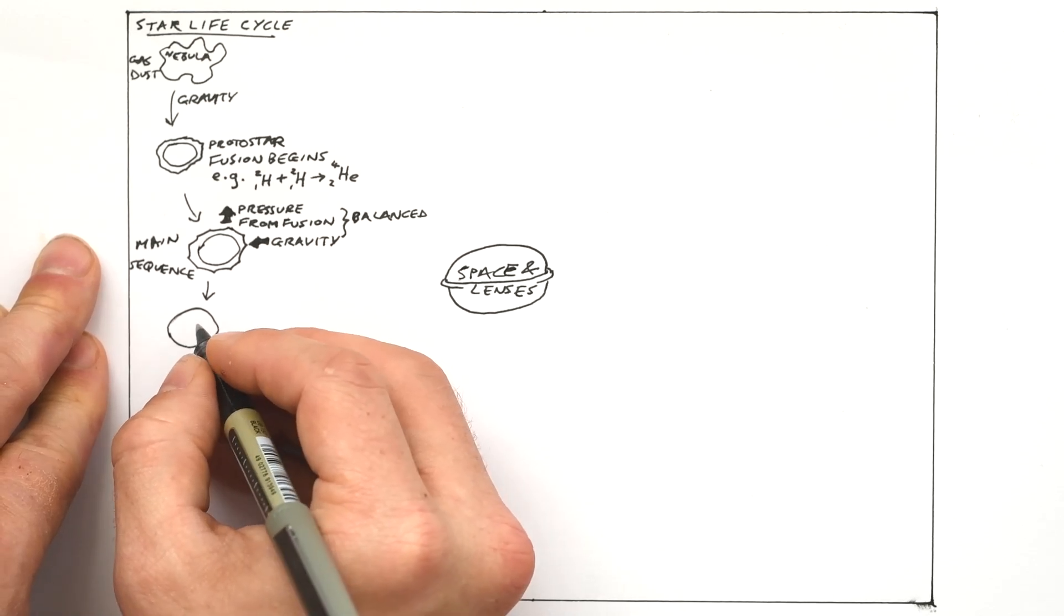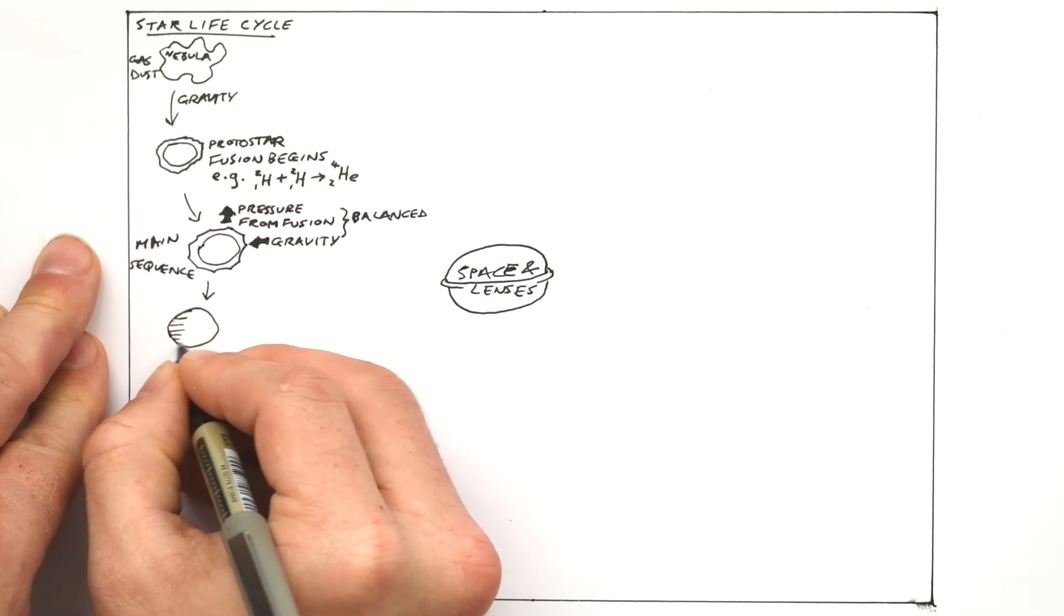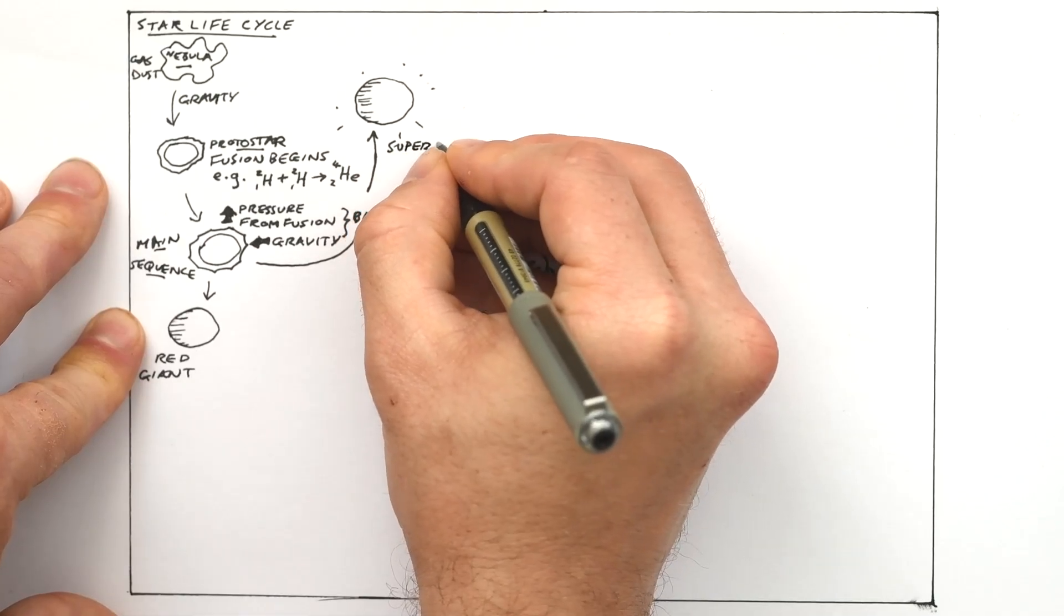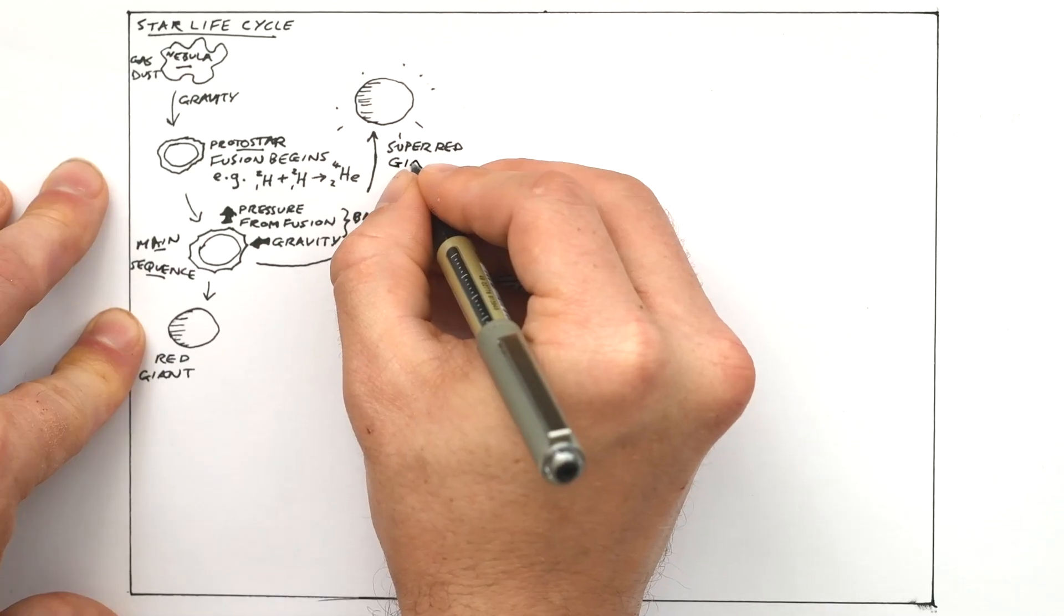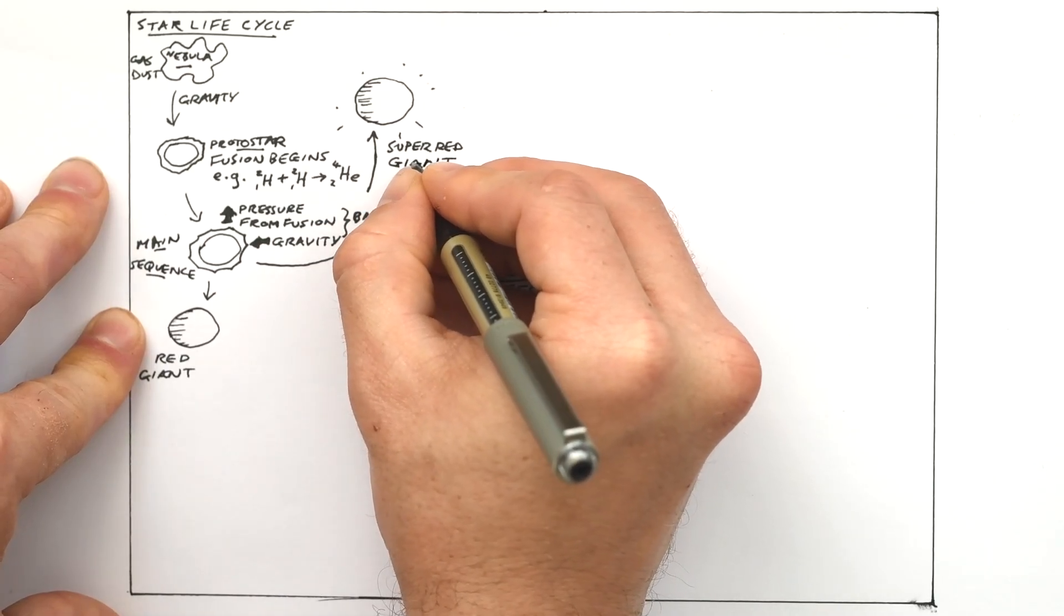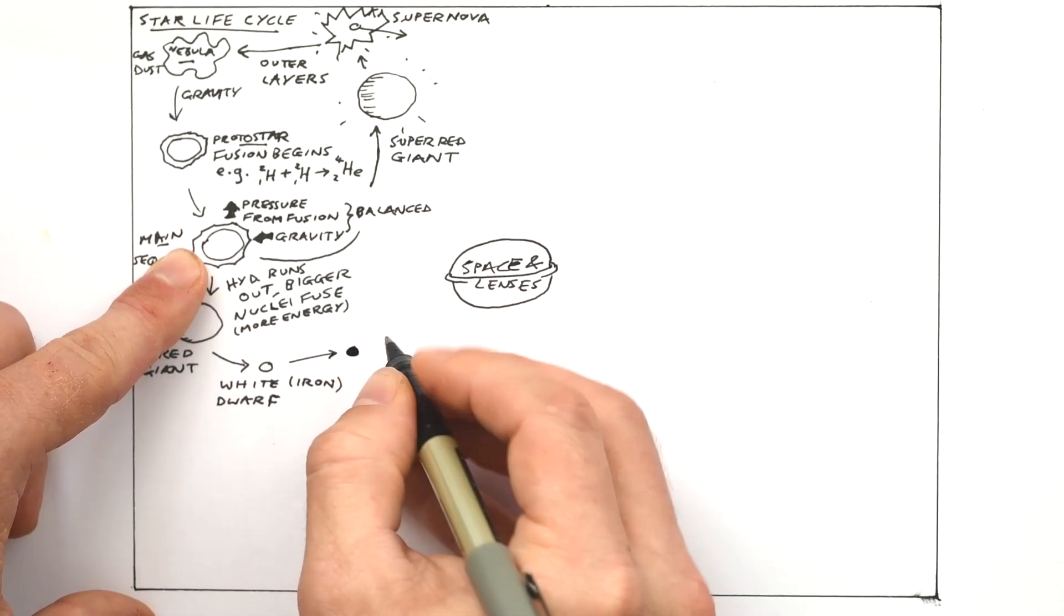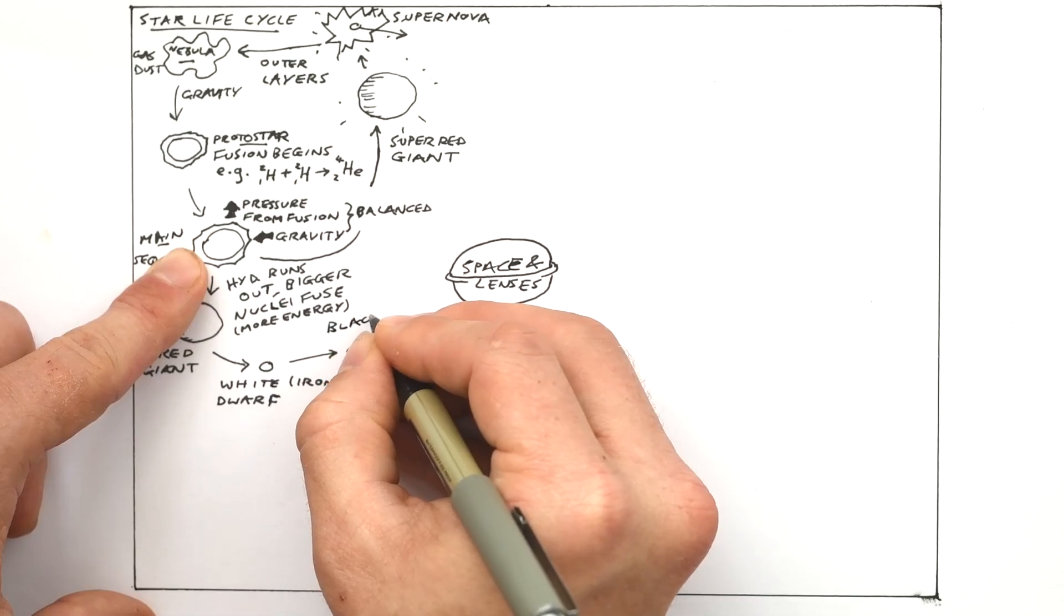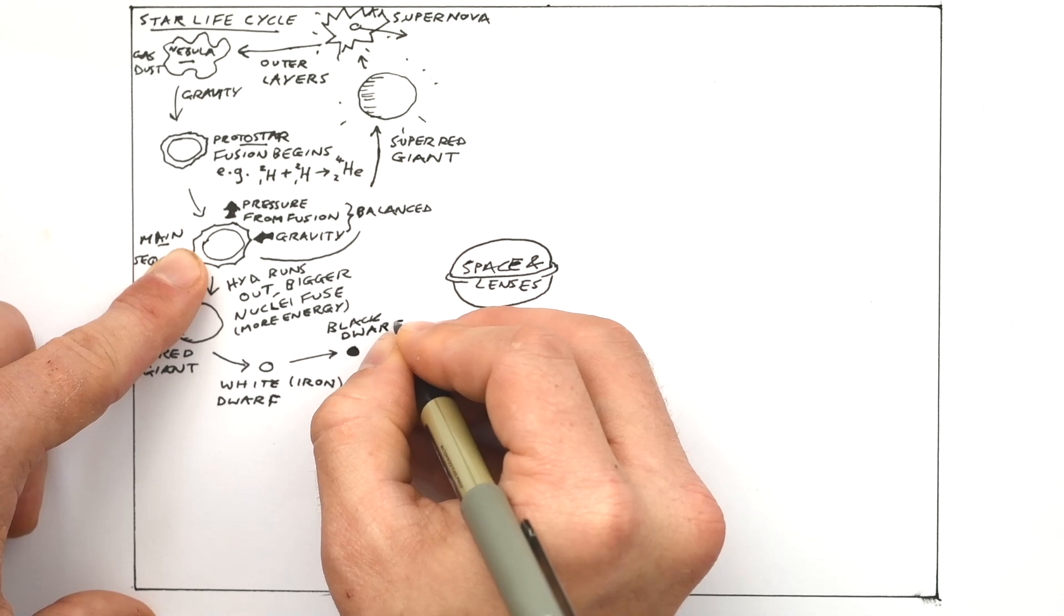But once the hydrogen starts to run out we only have the bigger nuclei fusing and that actually makes more energy and so the star will start to expand. If it's a similar size to our sun then it will become just a red giant but if it's bigger then it can become a super red giant. And they're kind of the same thing it's just what happens next that is different. Once the fuel runs out a red giant will just implode to make a white dwarf and then once completely spent it'll turn into a black dwarf and that will be mostly iron because iron is the most stable element out there.